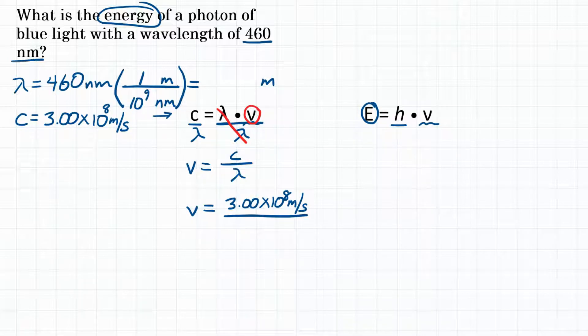We're doing this so that nanometers will cancel out and we'll be left with meters. Doing the math in your calculator, you would do 460 divided by 10 to the 9th power, and that would give you 4.60 times 10 to the negative 7 meters.